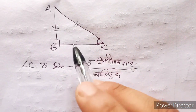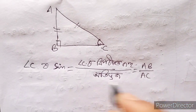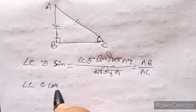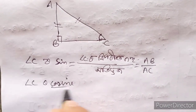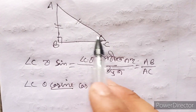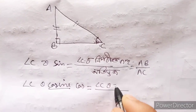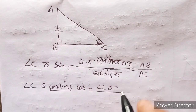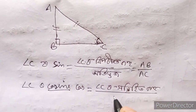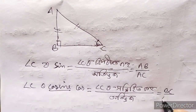So for angle C, we put the ratio: AB by AC. Then for cosine — cosine of angle C — cosine is equal to the adjacent side by hypotenuse, which gives us BC by AC.